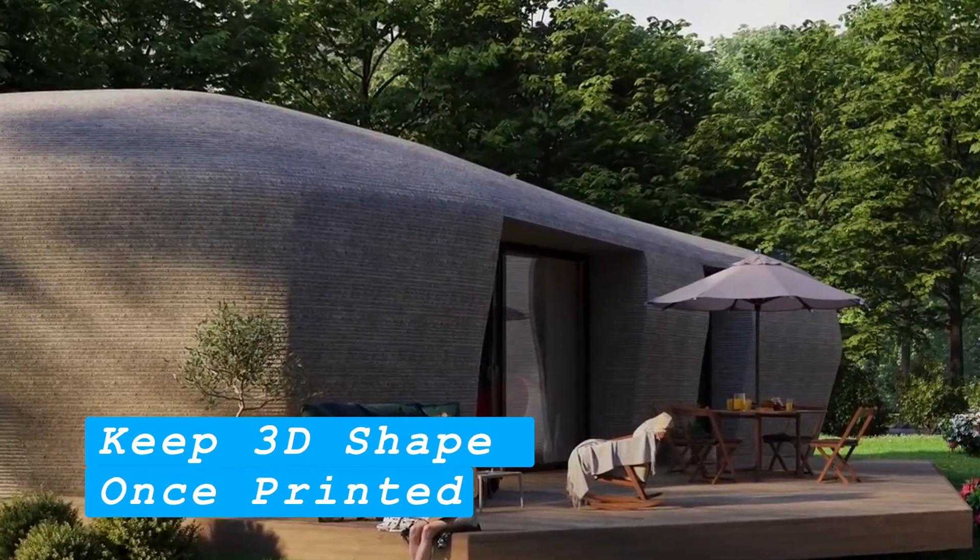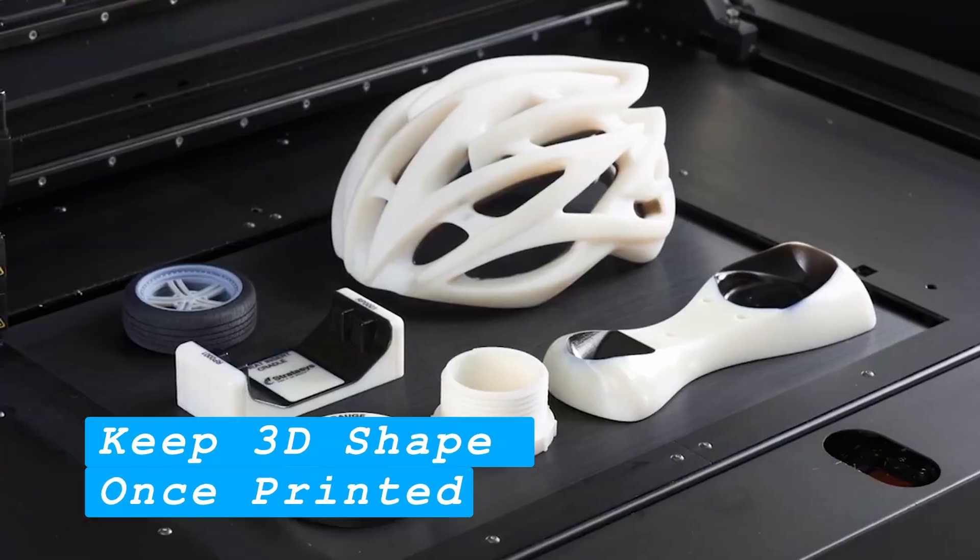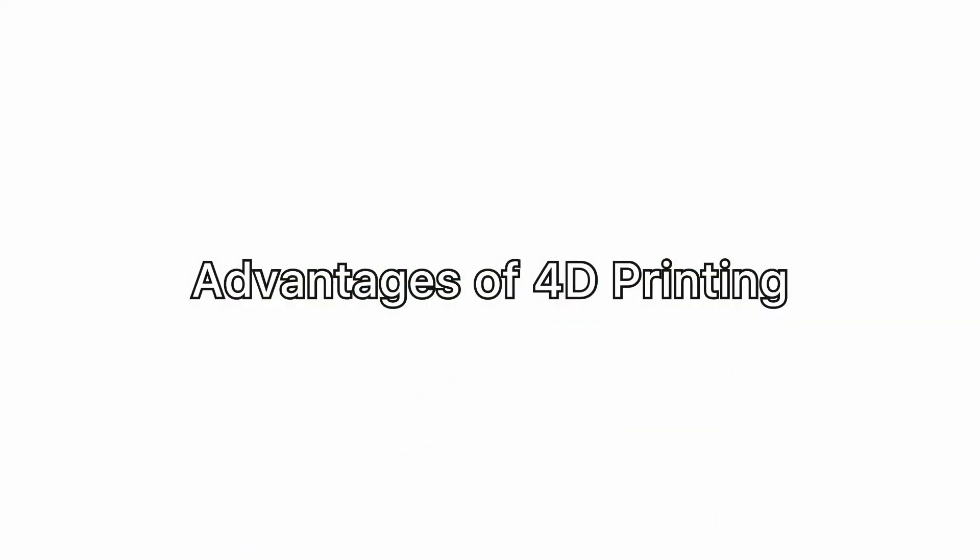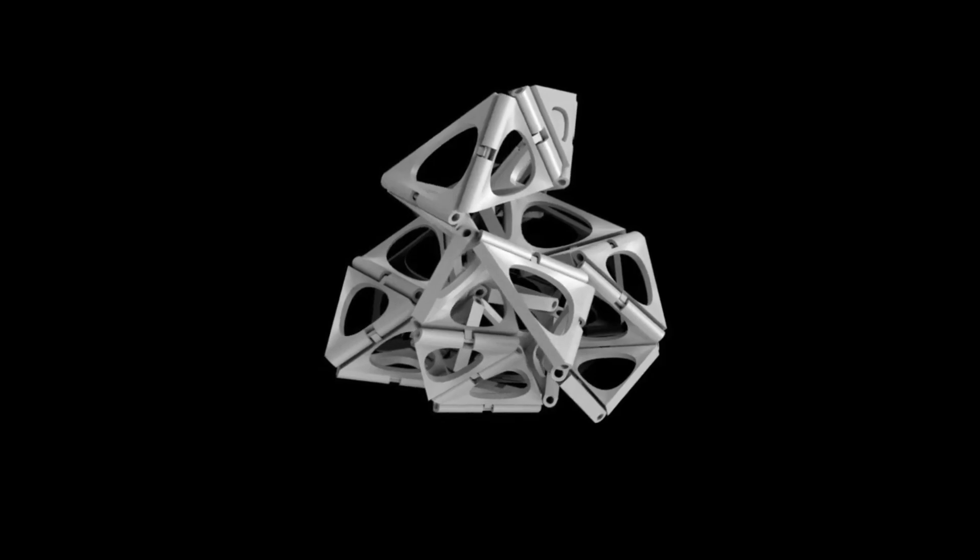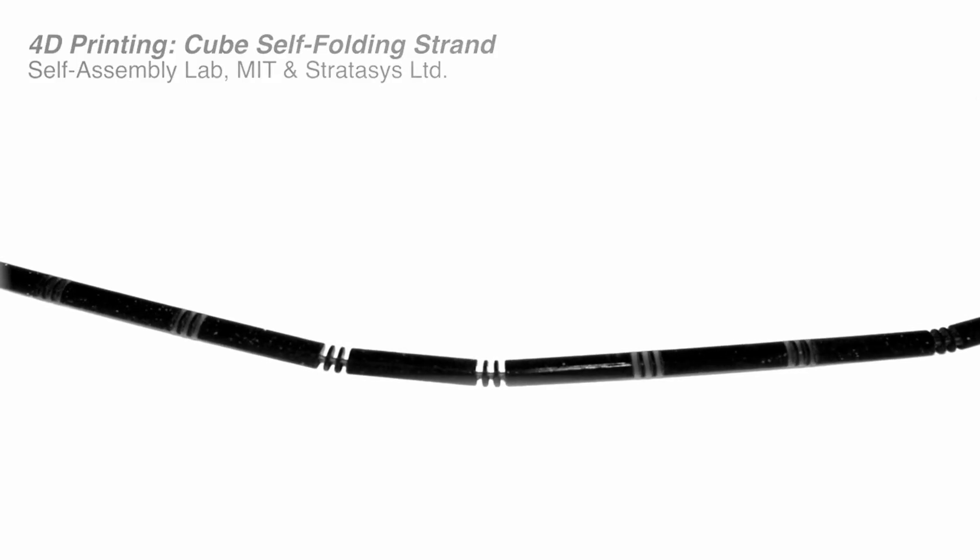That means that 3D printed objects are going to keep their 3D shape once printed. Advantages of 4D printing: 1. Size changing. The most obvious advantage of 4D printing is that, through computational folding, objects larger than printers can be printed as only one part.